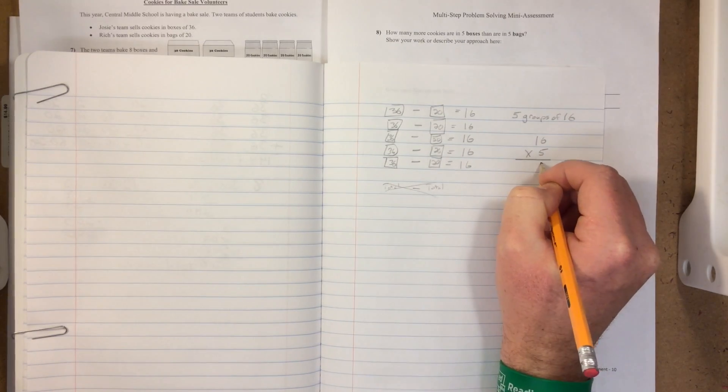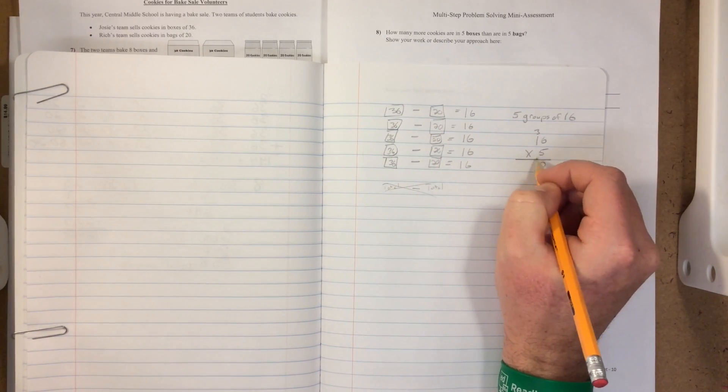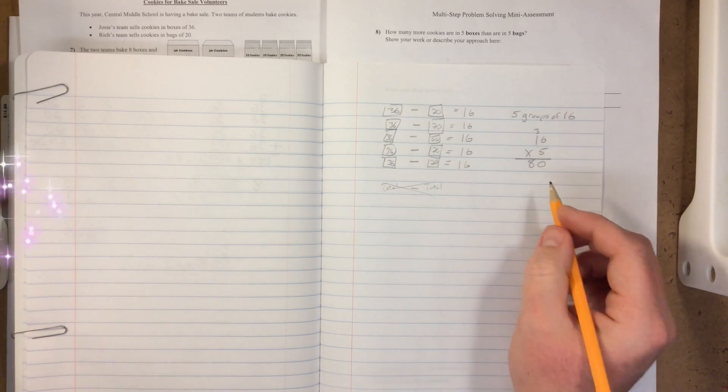So 5 times 16 is 0, carry the 3, so 5 times 1 is 5, plus 3 is 80, and that's it.